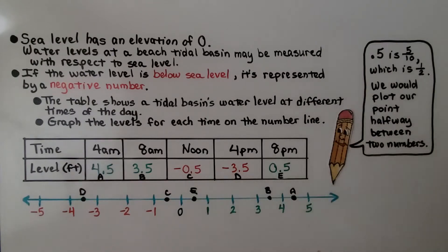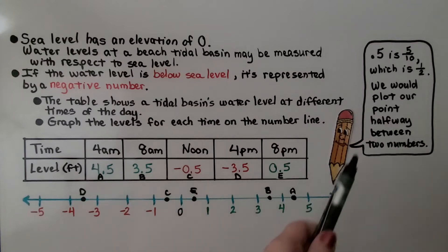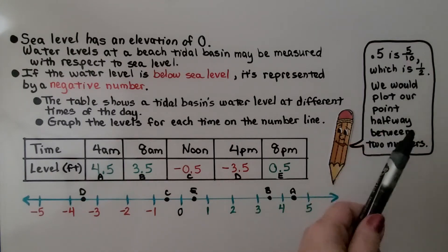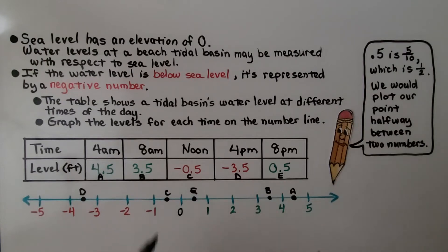Keep in mind: if it says .5, that means one half, because 5 tenths simplifies to 1 half. So we're going to be halfway between numbers when we plot the points.